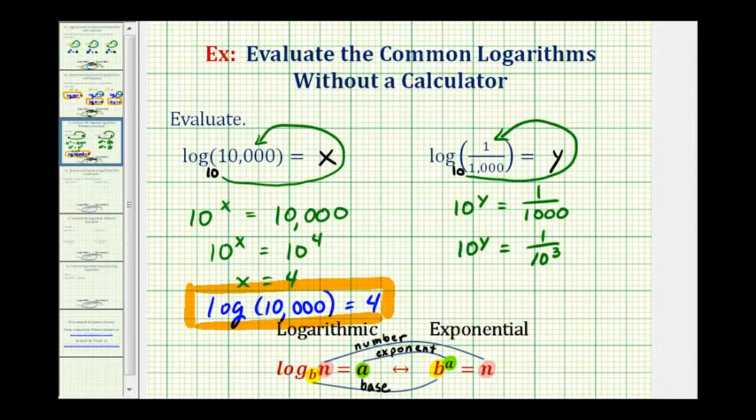Now we can use exponent properties to rewrite this. If we move this across the fraction bar to the numerator, it changes the sign of the exponent. This gives us 10^y = 10^(-3). If these are equal and the bases are the same, the exponents must be equal.